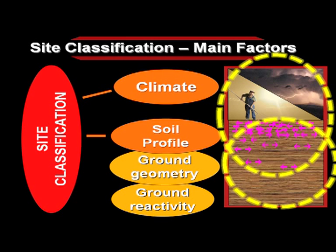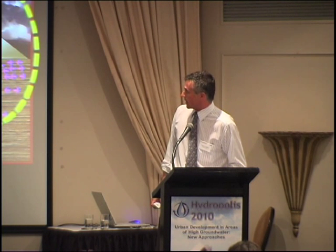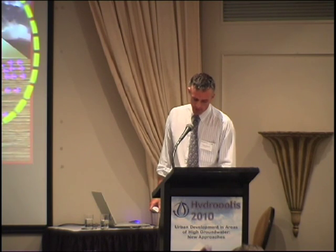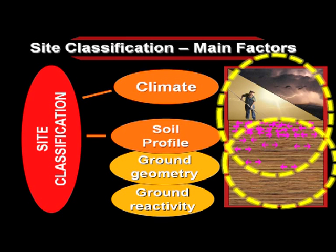The two main factors used in the standard to derive site classification are: first, the climate, because it controls HS — the depth to which clays will shrink and swell; and second, the soil profile, because it controls the intensity of swelling and shrinkage. To suitably describe the soil profile, we need to know the ground geometry — the thickness of different layers of clay, sand, and rock — and the ground reactivity, meaning how much each layer shrinks and swells.